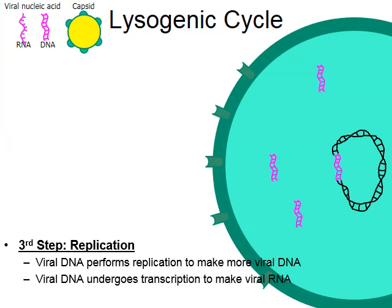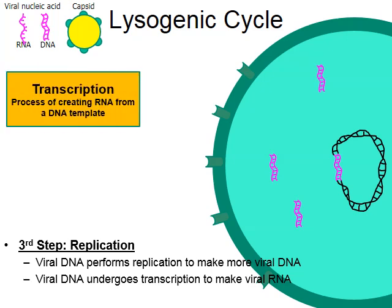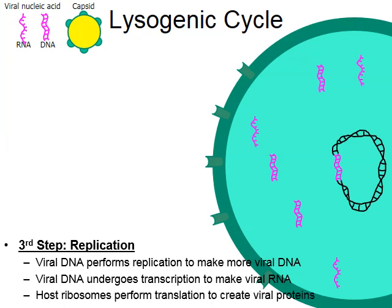The DNA that was just created then undergoes transcription in order to make RNA. Transcription is the process of creating RNA from a DNA template. The viral DNA in purple is used to make viral RNA in purple as well, producing multiple molecules of viral RNA through the process of transcription. The host cell's ribosomes will then perform translation on behalf of the virus.